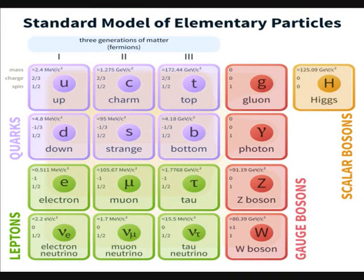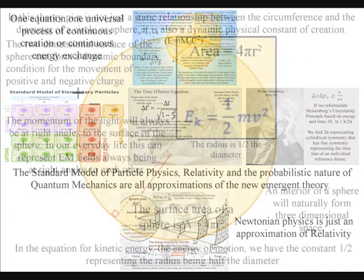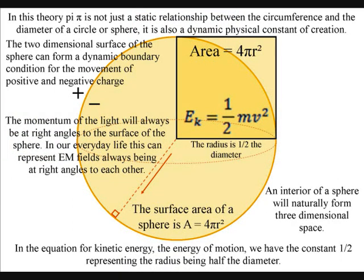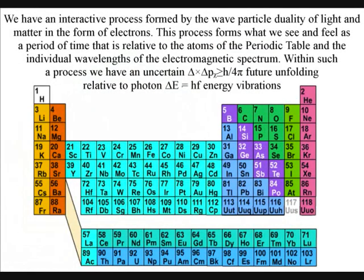It might seem impossible to have a simple explanation of such complexity, but we can have a very simple explanation if the universe is explained as a continuum, with an emergent future bubbling up from the smallest quantum level relative to the atoms of the periodic table.